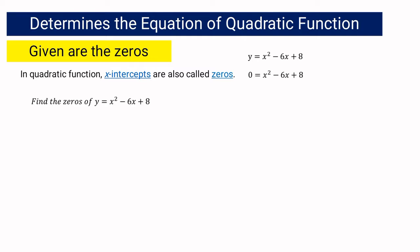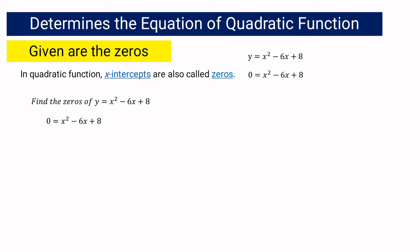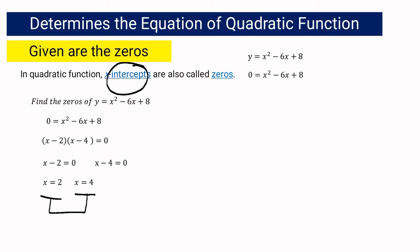Suppose you are asked to find the zeros of y equals x squared minus 6x plus 8, meaning y must be equal to zero. To solve for the x-intercepts or zeros, you can use either factoring, completing the square, extracting the square root, or using the quadratic formula. Since this one is factorable, the correct factors are x minus 2 and x minus 4. Using the zero product property, equate each factor to zero. Solving for x, the values are 2 and 4 — those are the x-intercepts and the zeros of the quadratic function.